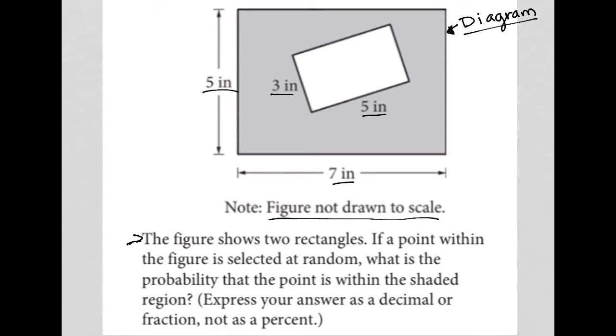The question says the figure shows two rectangles. If a point within the figure is selected at random, what is the probability that the point is within the shaded region?